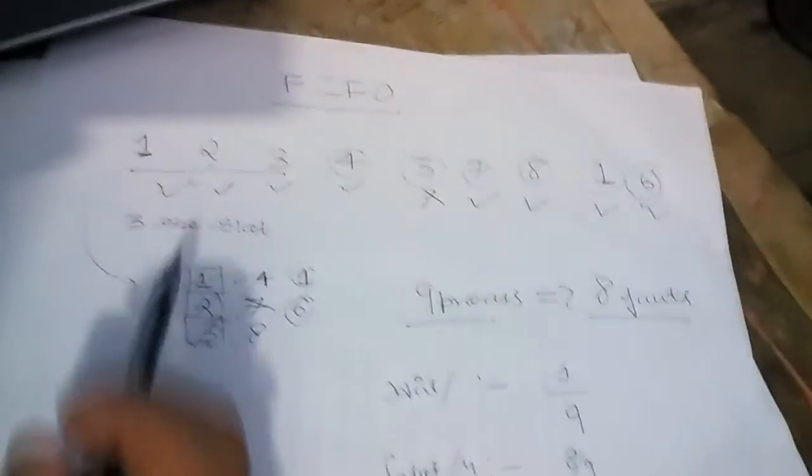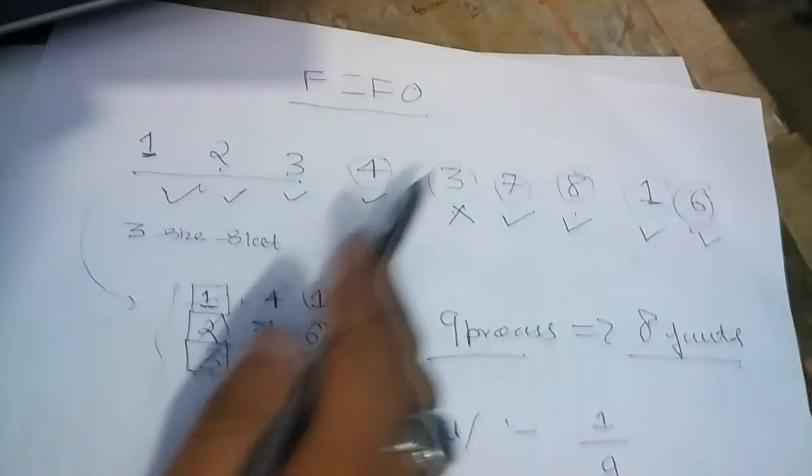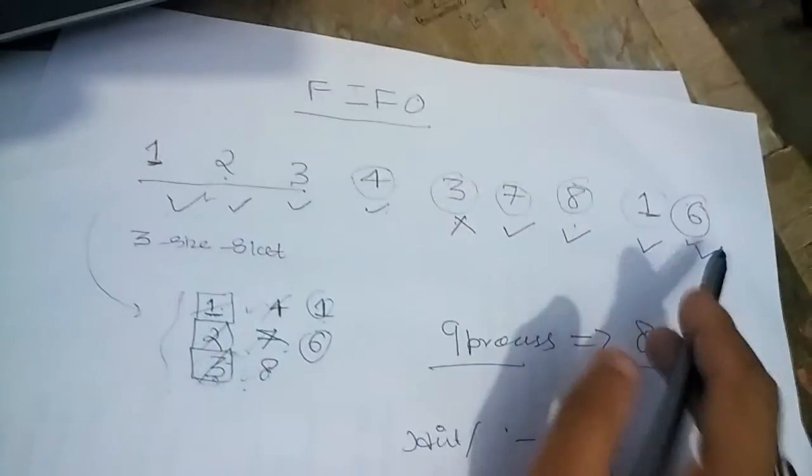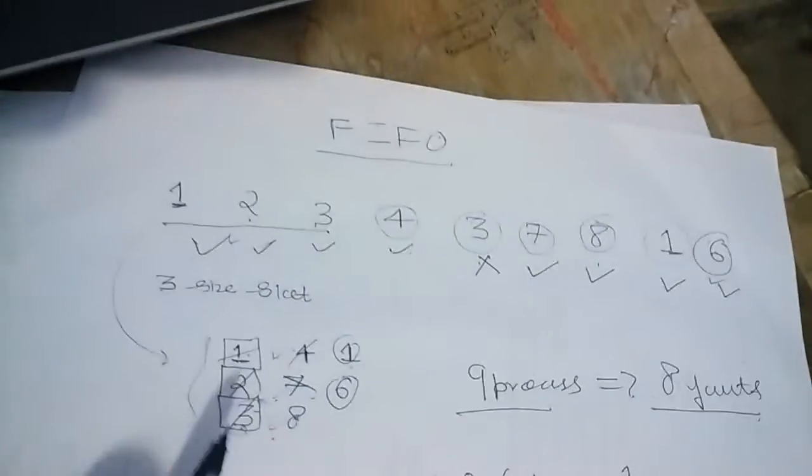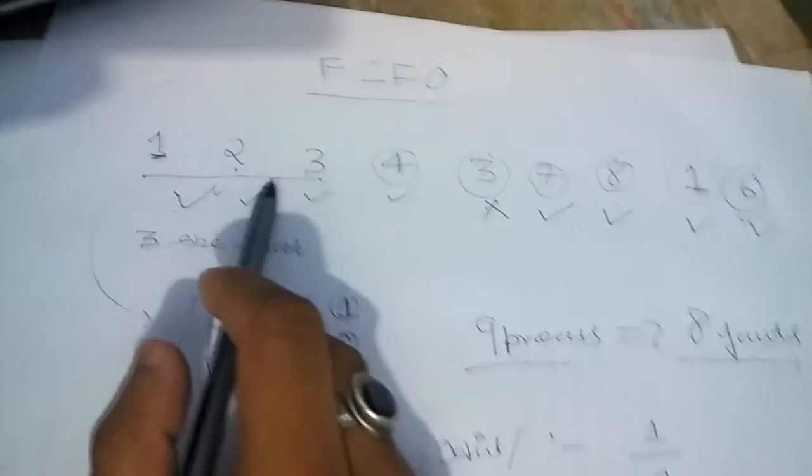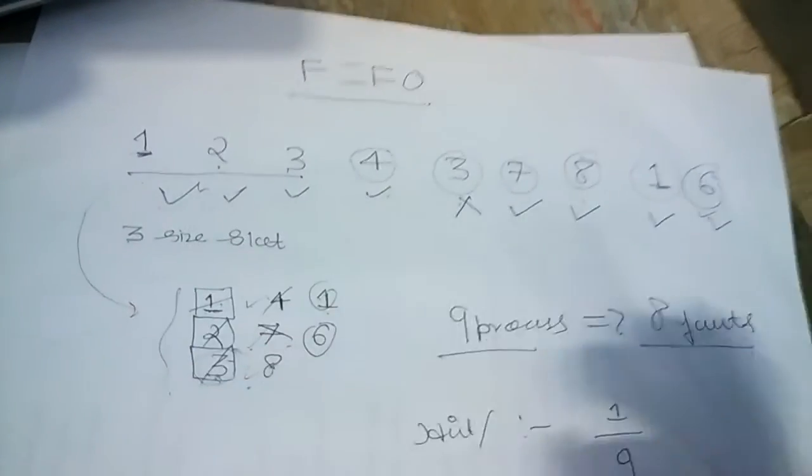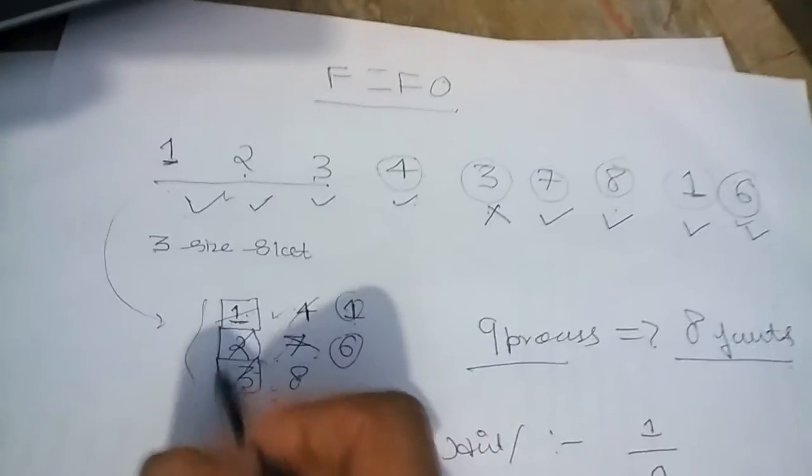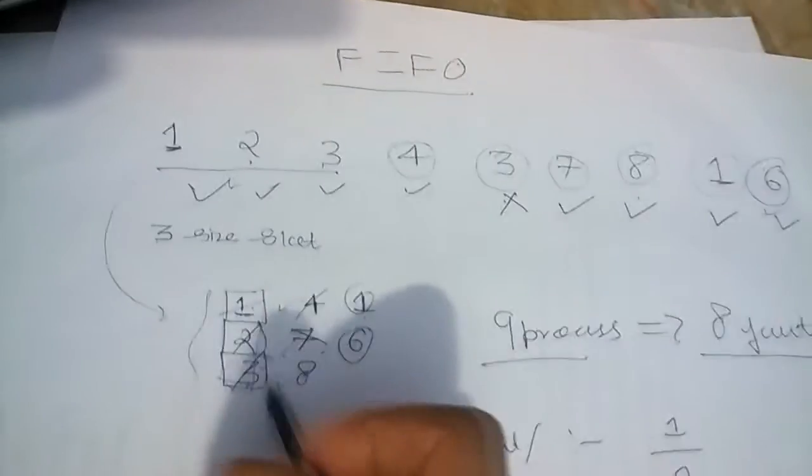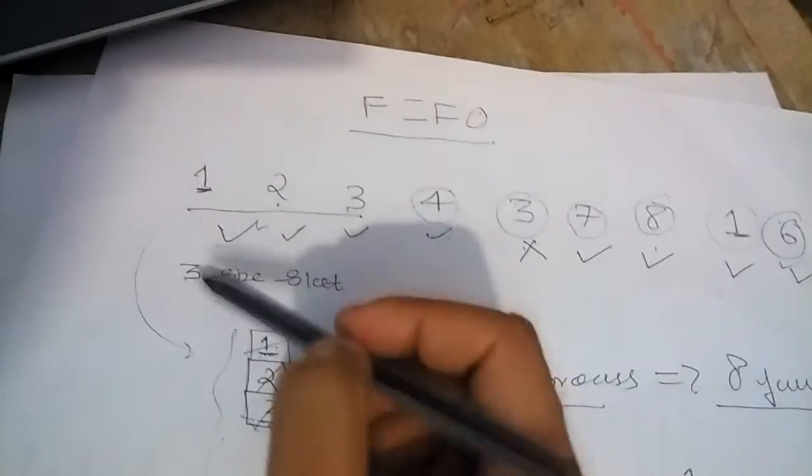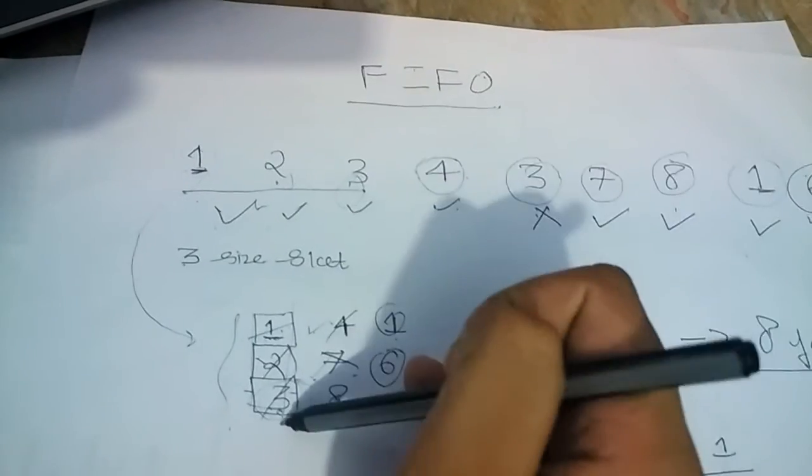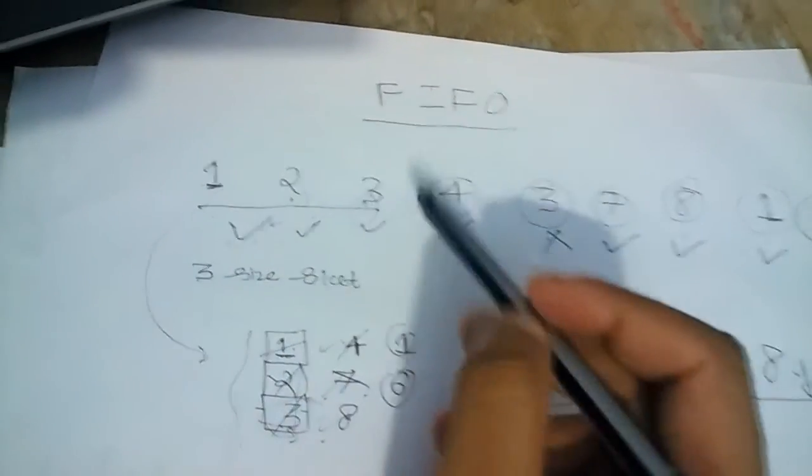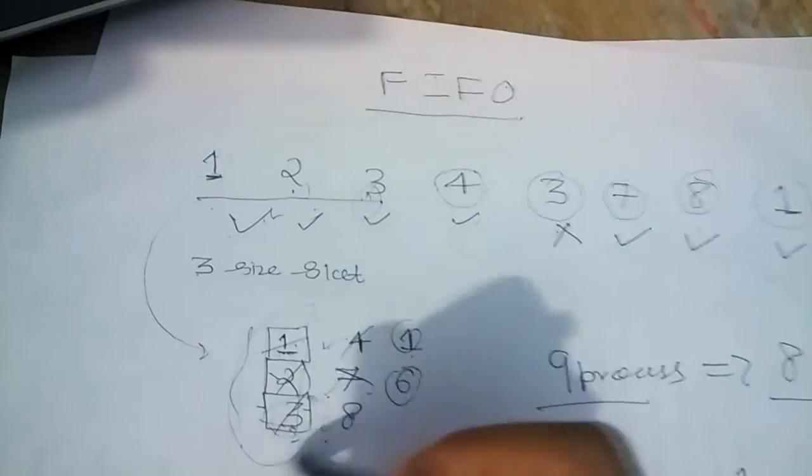Let's again review. We have given some process IDs: 1, 2, 3, 4, 3, 7, 8, 1, and 6. It could be a process number also. The thing is that these are given to identify our process. We have given 3 size frames. What we do: we brought 1 here, then 2 here, then 3 here. Obviously they will be fault because we have initially emptied it.